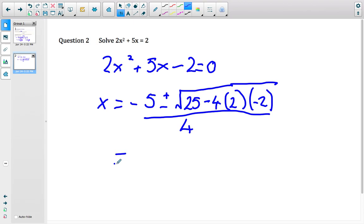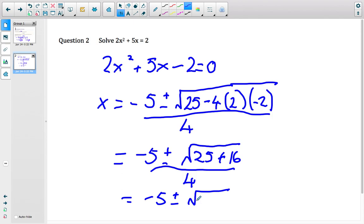So if we're tidying that up, we are going to have minus 5 plus or minus. I'm just going to keep it with a 25 at the moment. Minus. And then what do we have here? Plus 16. I need to all over 4. So I think that will get us minus 5 plus or minus. And that would be 41. Is that right? All over 4. Perfect.